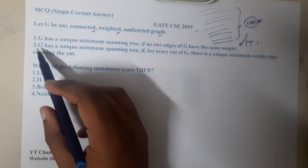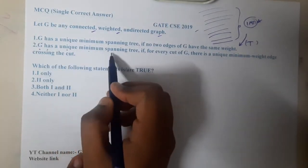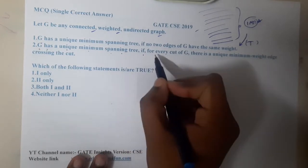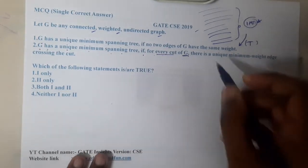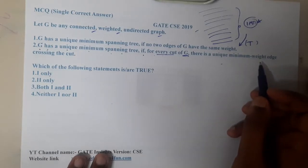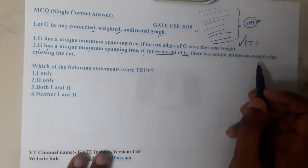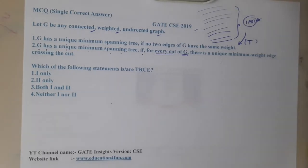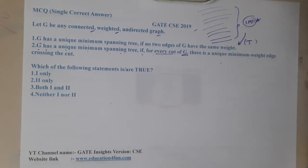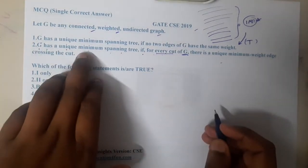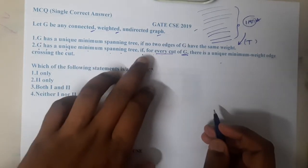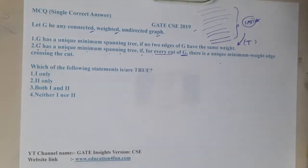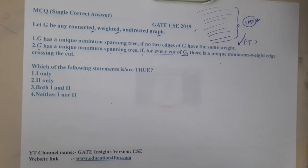Option B says that G has a unique minimum spanning tree if for every cut of G there is a unique minimum weighted edge crossing the cut. This option seems a bit confusing. With some basic understanding, I think option B should be wrong. G has a unique minimum spanning tree if for every cut set of G there is a unique minimum weighted edge crossing the cut.